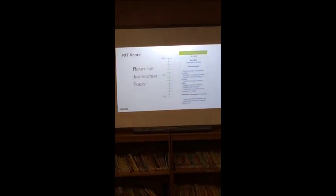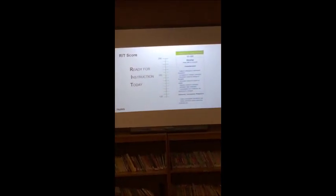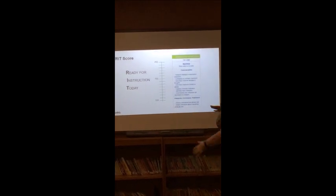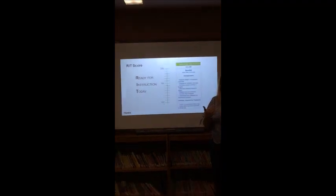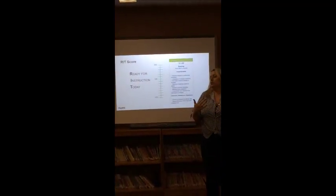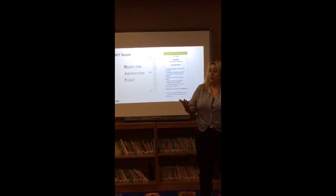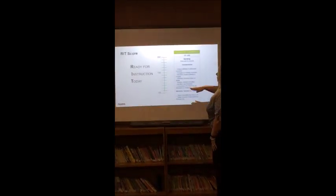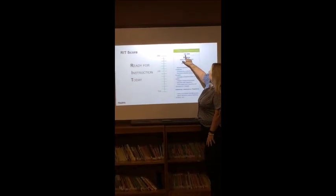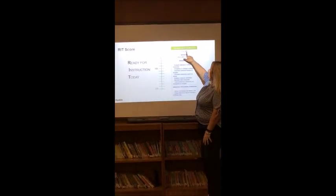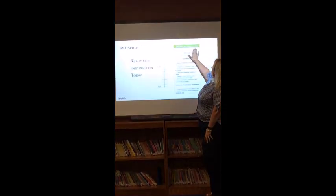And so what we refer to the RIT score is ready for instruction today. So unlike those other standardized tests that measure mastery, this measures instructional growth. So it measures where your student is ready for. Within these RIT scores, we have RIT bands. And so we can see that this one is 191 to 200. And we're looking at literature and key ideas. It shows us that this is the develop stage.